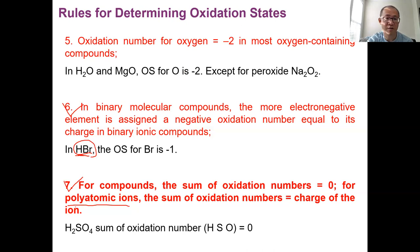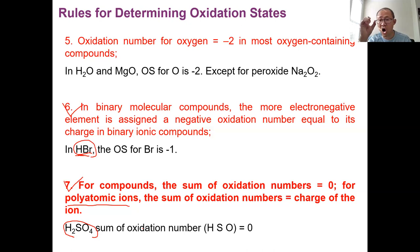For example, sulfuric acid H₂SO₄ — it is a neutral molecule, so the sum of the oxidation numbers for hydrogen, sulfur, and oxygen atoms — all seven atoms (two hydrogen, one sulfur, four oxygen) — should equal zero. This is why rule seven is so useful: when some oxidation numbers are positive and some are negative, adding them all together should equal zero.